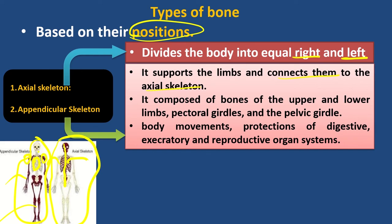The appendicular skeleton is composed of bones of the upper and lower limbs. The pectoral girdle is the same as a pectoral bone.